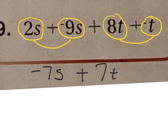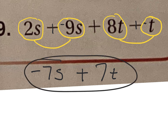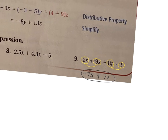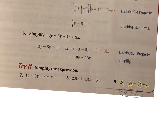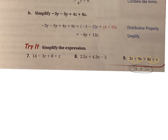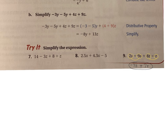To simplify that one, it becomes negative 7s plus 7t. Hopefully that makes sense on how to simplify some algebraic expressions.